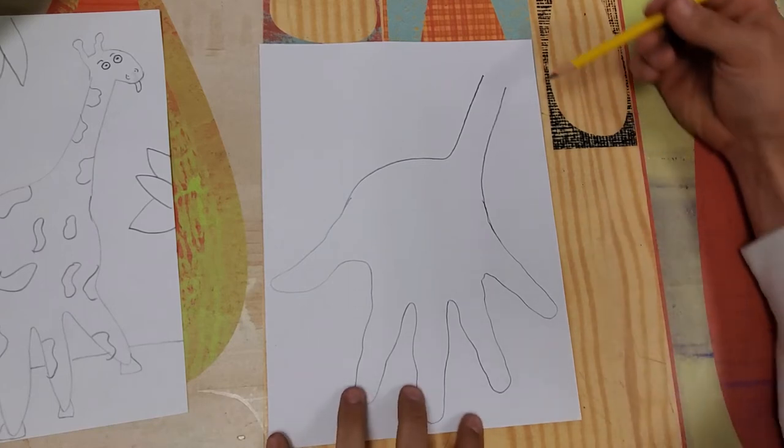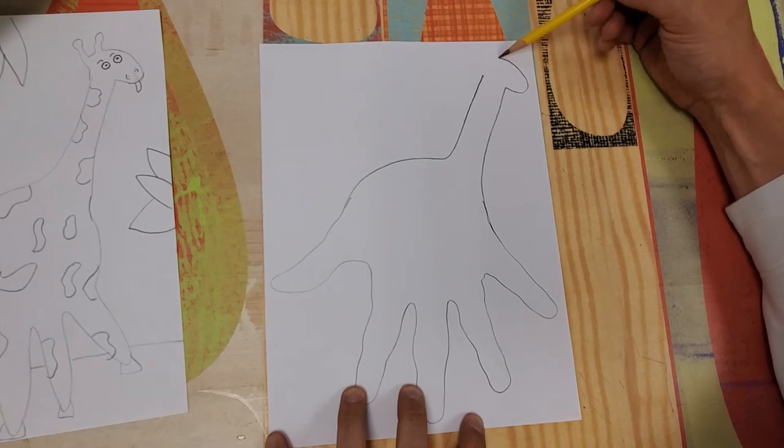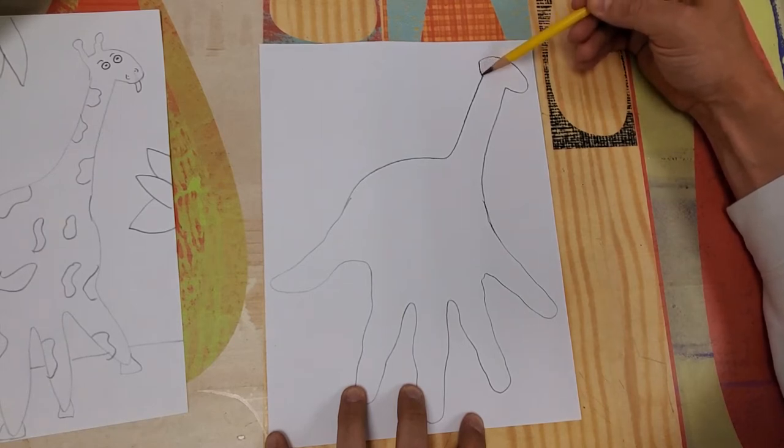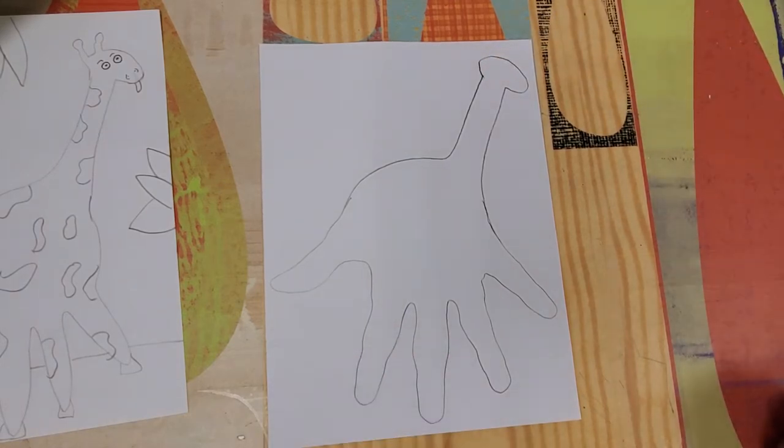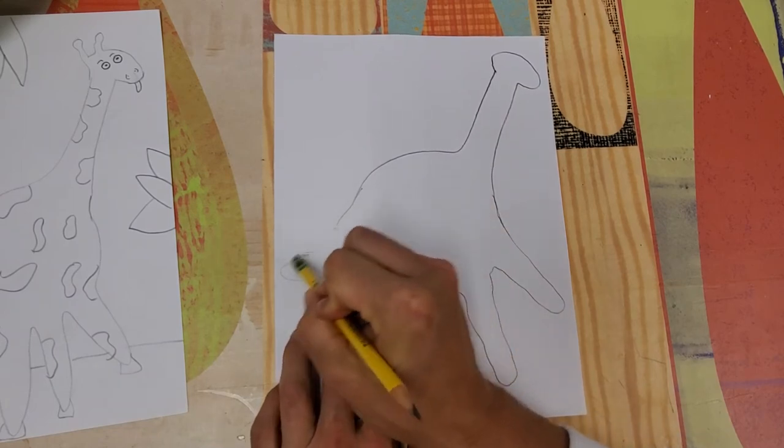Now I'm going to place a nice oval shape in here for the giraffe's head and we'll come back there later for some detail work. Now we're actually going to erase some of our thumb.